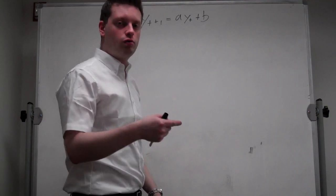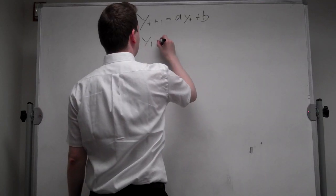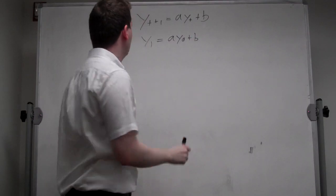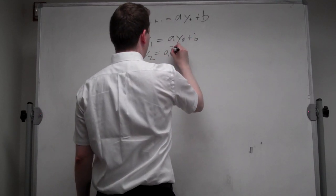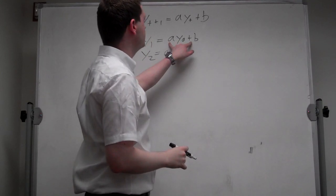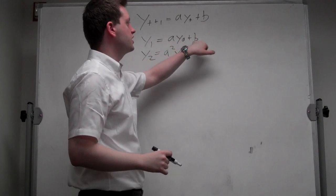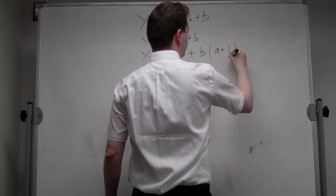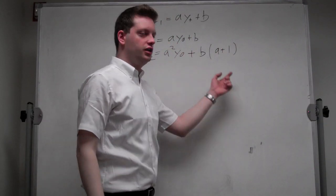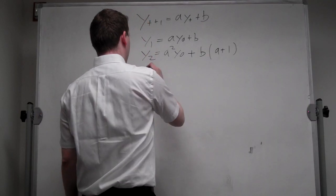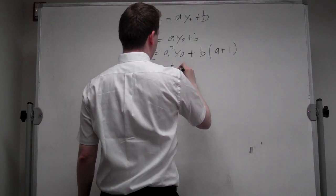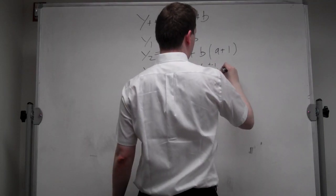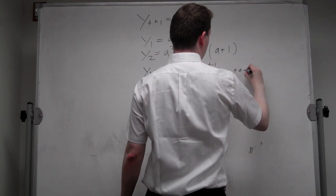So let's solve this equation by iterating it forward. We start with y1 equals a times y0 plus b. y2 equals a squared times y0 — we plug this in and we get b plus ab, plus b times a plus 1. Now we can iterate it forward, and yt equals a to the t times y0, plus b times the sum of a to the t minus 1, plus a plus 1.